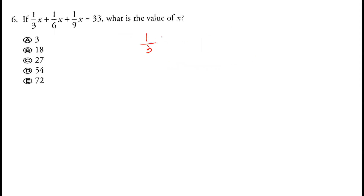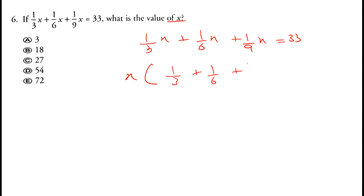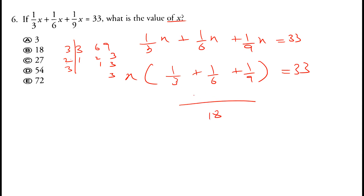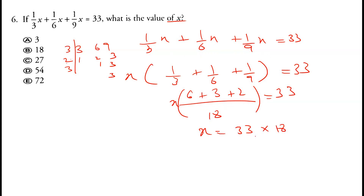Question 6: (1/3)x plus (1/6)x plus (1/9)x equals 33. Taking x as common gives x times (1/3 plus 1/6 plus 1/9). The LCM of 3, 6, and 9 is 18, giving 11 over 18. So x equals 33 multiplied by 18 divided by 11, which equals 54. Option D is correct.